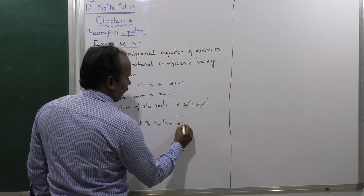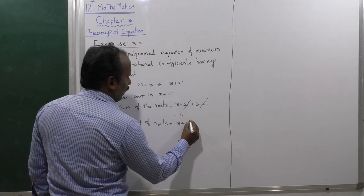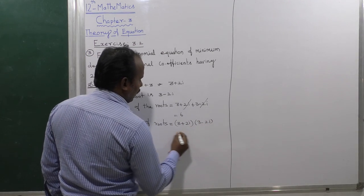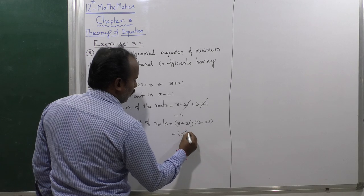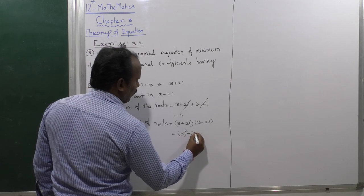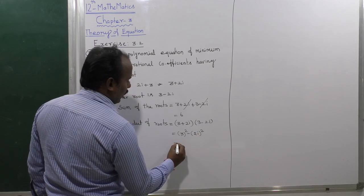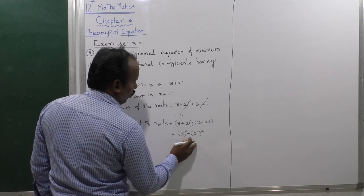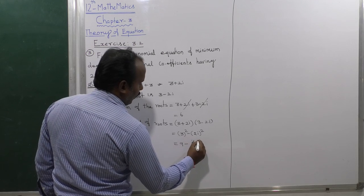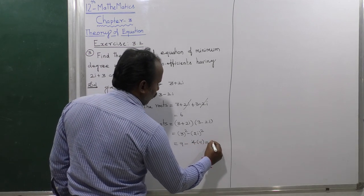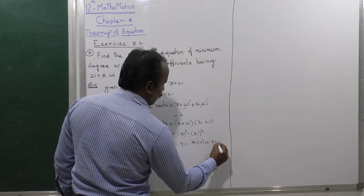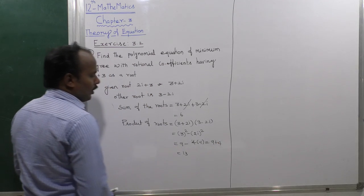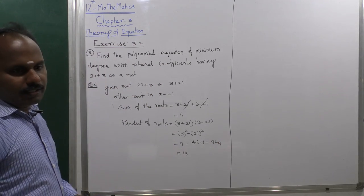Product of the roots equals (3 plus 2i) times (3 minus 2i), which equals 3 squared minus (2i) squared, equal to 9 minus 4 times (minus 1), which gives 9 plus 4 equals 13.